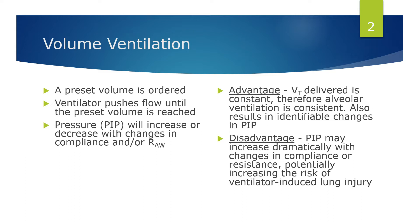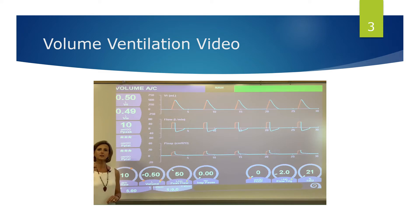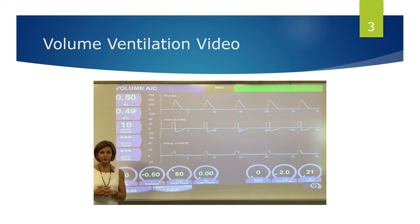The downside of this mode is that the PIP can dramatically increase when compliance decreases or airway resistance increases, and if that happens there's a higher likelihood of ventilator-induced lung injury. We are filming a two-video series to show the difference between volume ventilation and pressure ventilation, starting with volume ventilation first.